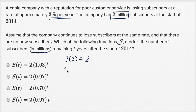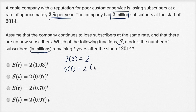What is S of one going to be when T equals one? Well, one year has gone by, so they're going to lose three percent of their subscribers. And losing three percent is the same thing as retaining 97 percent. So it's going to be two times 0.97.